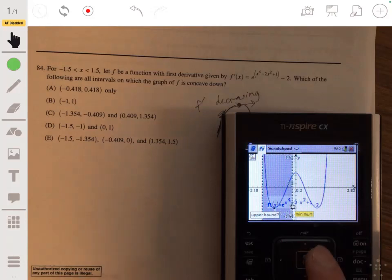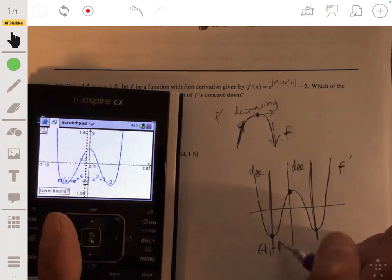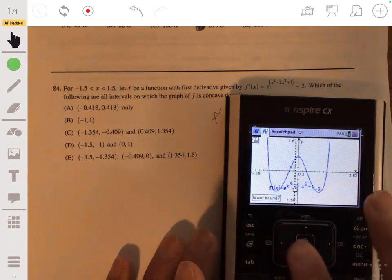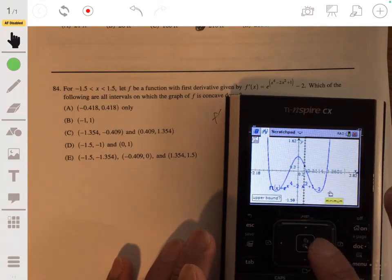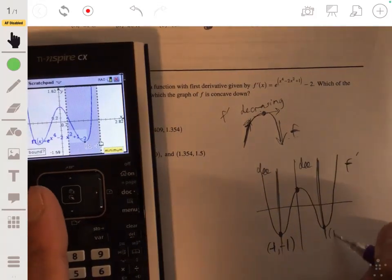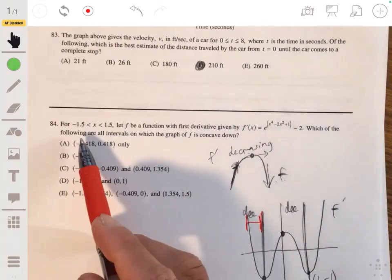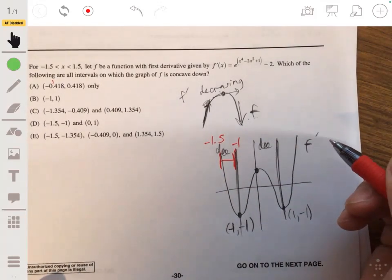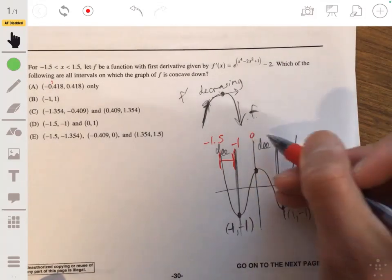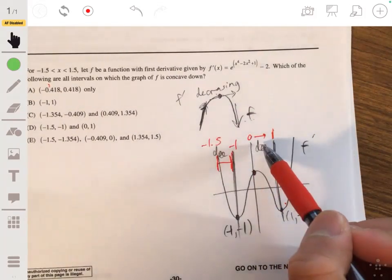So on the left, we have a minimum at negative one, so negative one, negative one. And on the right, I believe that's going to be one, negative one. Yep, one, negative one. See, so it's decreasing on this interval. Since we're starting at negative 1.5, it's decreasing from negative 1.5 to negative one. And it's decreasing from 0 to 1. And so our answer is d.